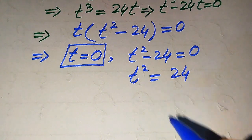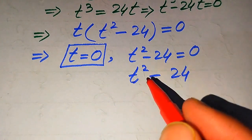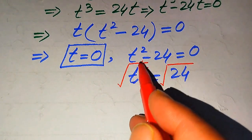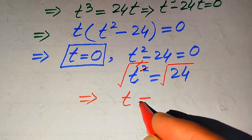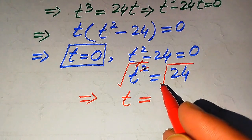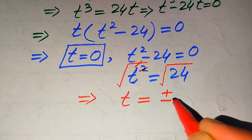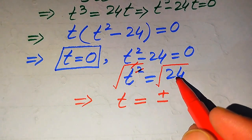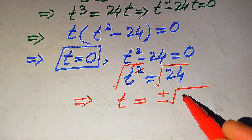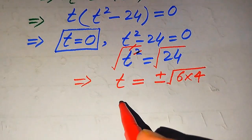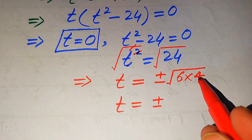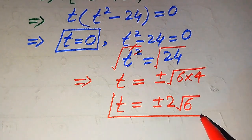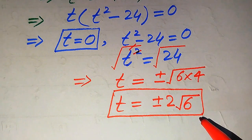To find the values of t we take the square root on both sides. The square and square root cancel on the left, giving t equals plus or minus the square root of 24. We write 24 as 6 times 4, so the square root of 24 becomes the square root of 4 times the square root of 6, which is 2 times square root of 6. Therefore t equals plus or minus 2 times square root of 6.